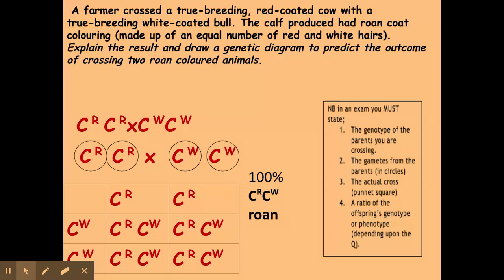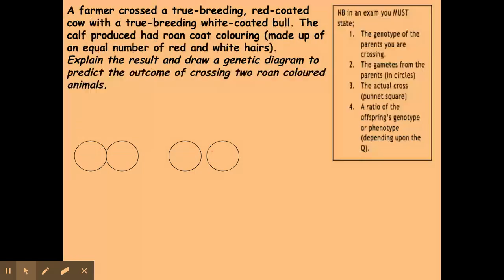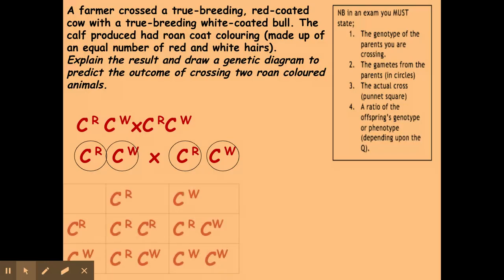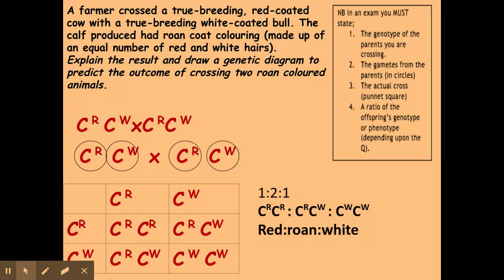The second part of the question asks what would happen if we crossed two roan individuals. I have the genotypes of the two roan parents, express the gametes in circles, put them into a cross, and express my ratio. I get a 1:2:1 ratio of red to roan to white. So crossing two heterozygous co-dominant individuals always gives a 1:2:1 ratio.